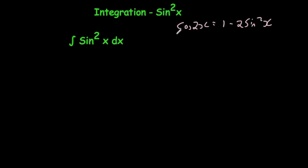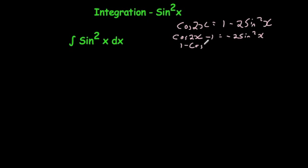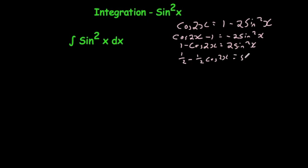Let's bring the one over: cos 2x minus 1 equals minus 2 sine squared x. Multiplying through by minus 1, we switch these around to get 1 minus cos 2x equals 2 sine squared x. Dividing through by 2 gives us one half minus one half cos 2x equals sine squared x.